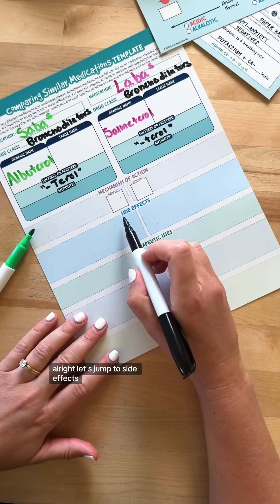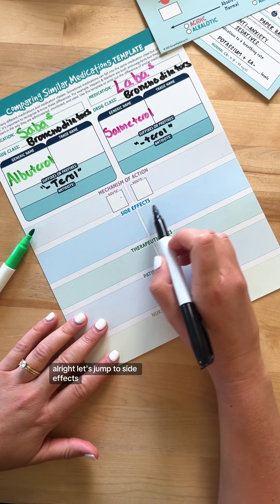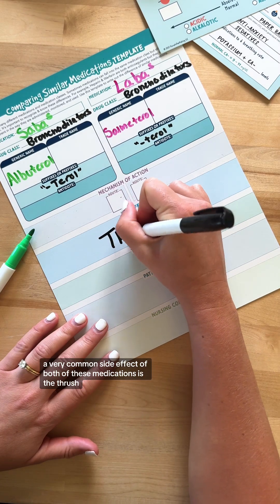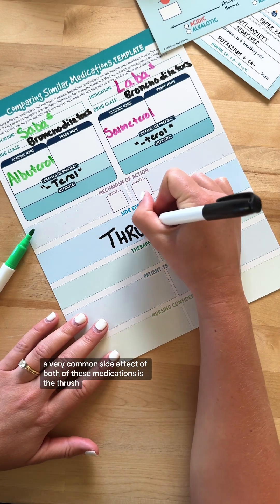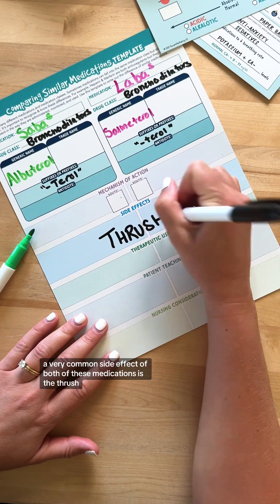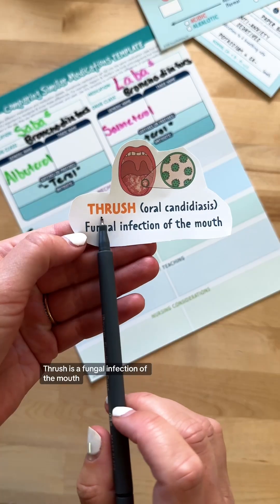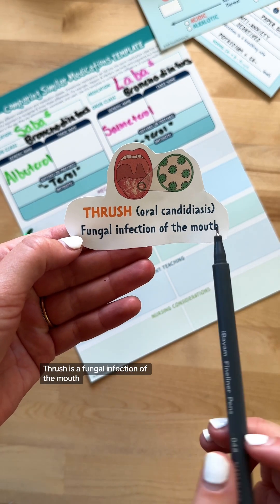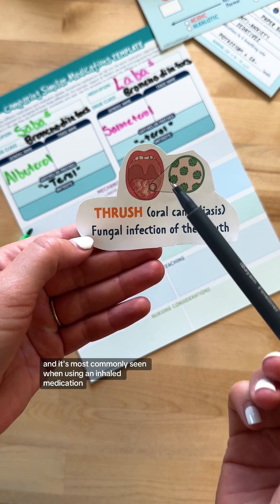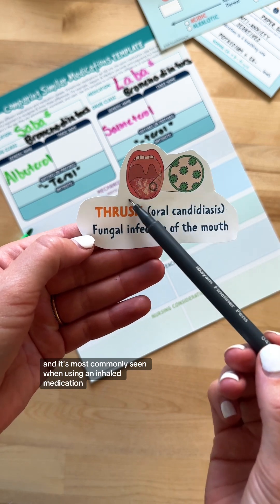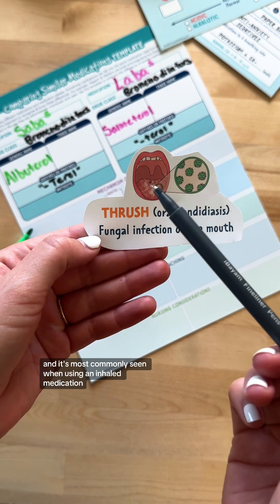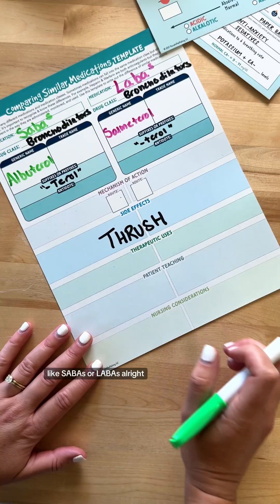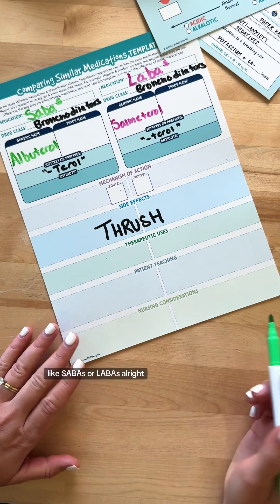A very common side effect of both of these medications is thrush. Thrush is a fungal infection of the mouth, and it's most commonly seen when using an inhaled medication like SABAs or LABAs.